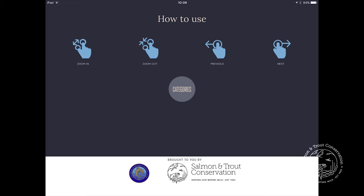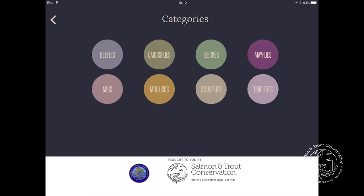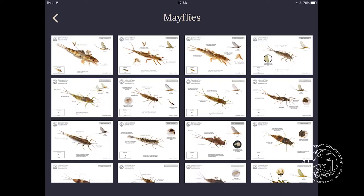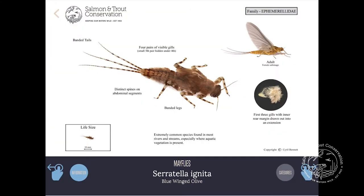From the How to Use screen, you can access the Categories screen and make a selection. By way of an example, choose Mayflies, and this links to a series of thumbnails. Select one — in this case the iconic blue-winged olive — and the species screen enlarges to reveal a high quality image of the larvae together with identification features and other details.